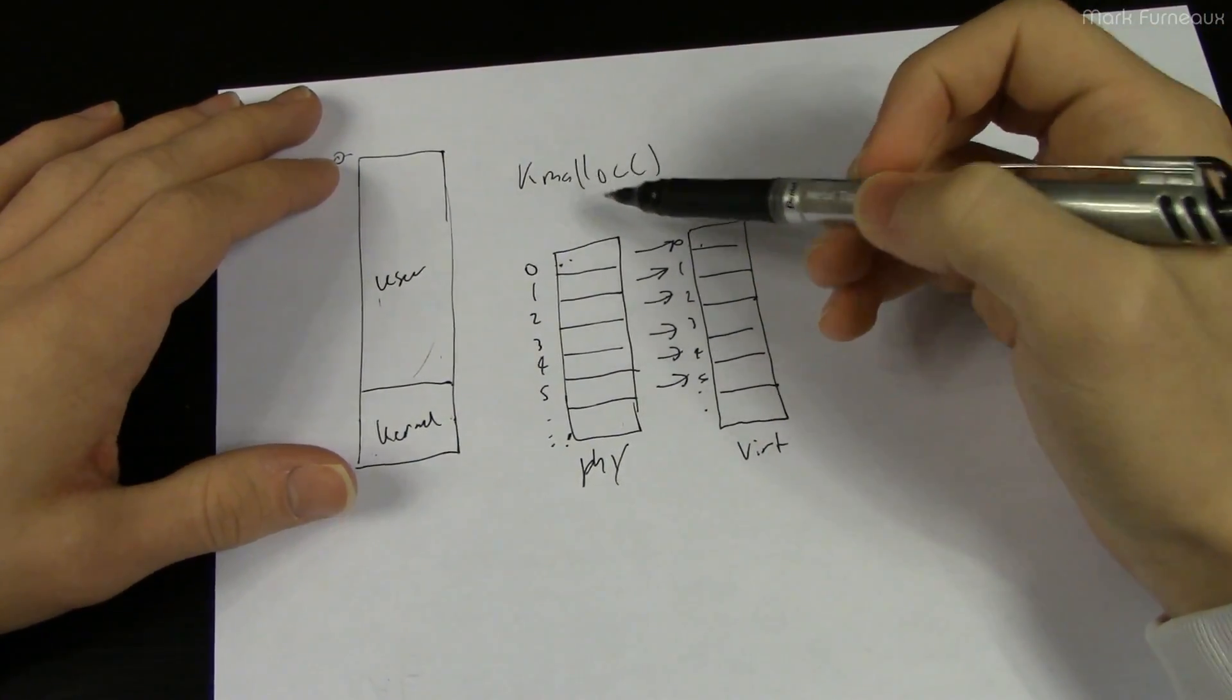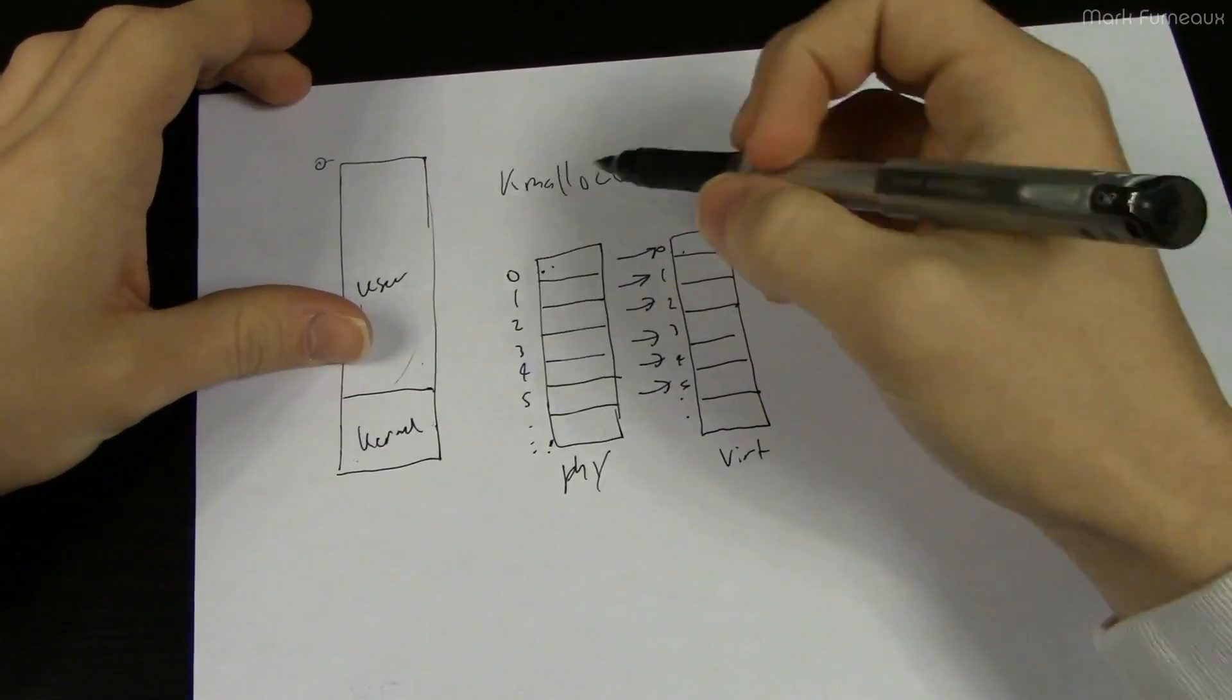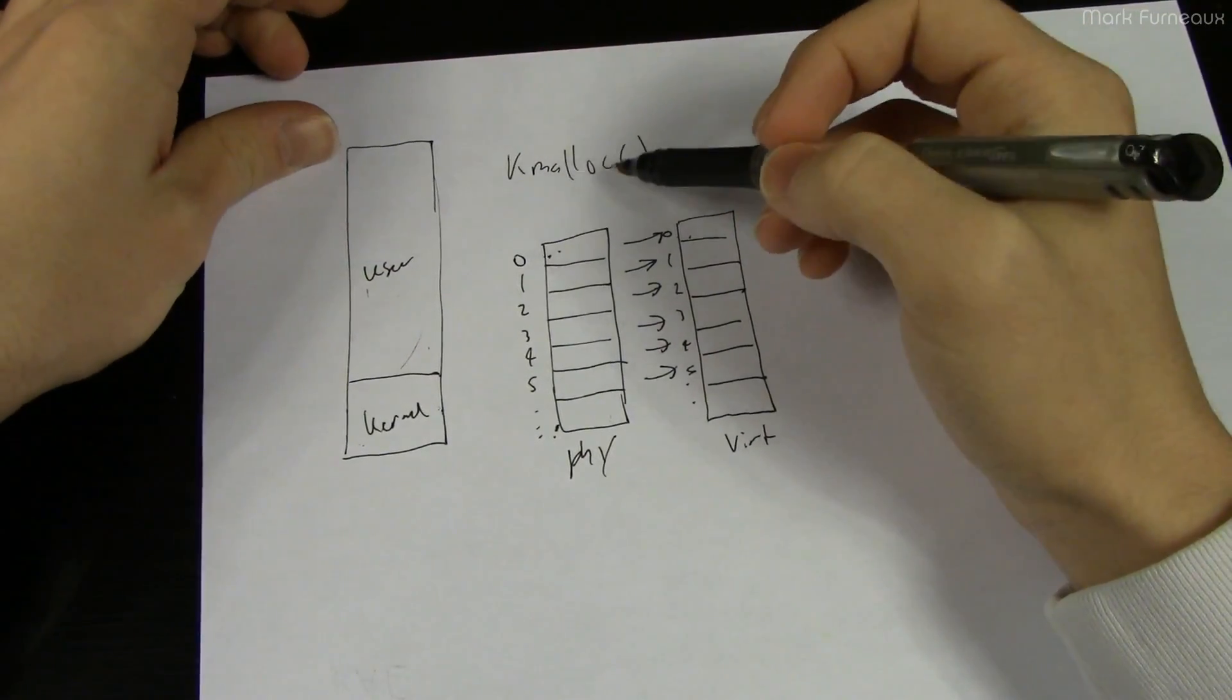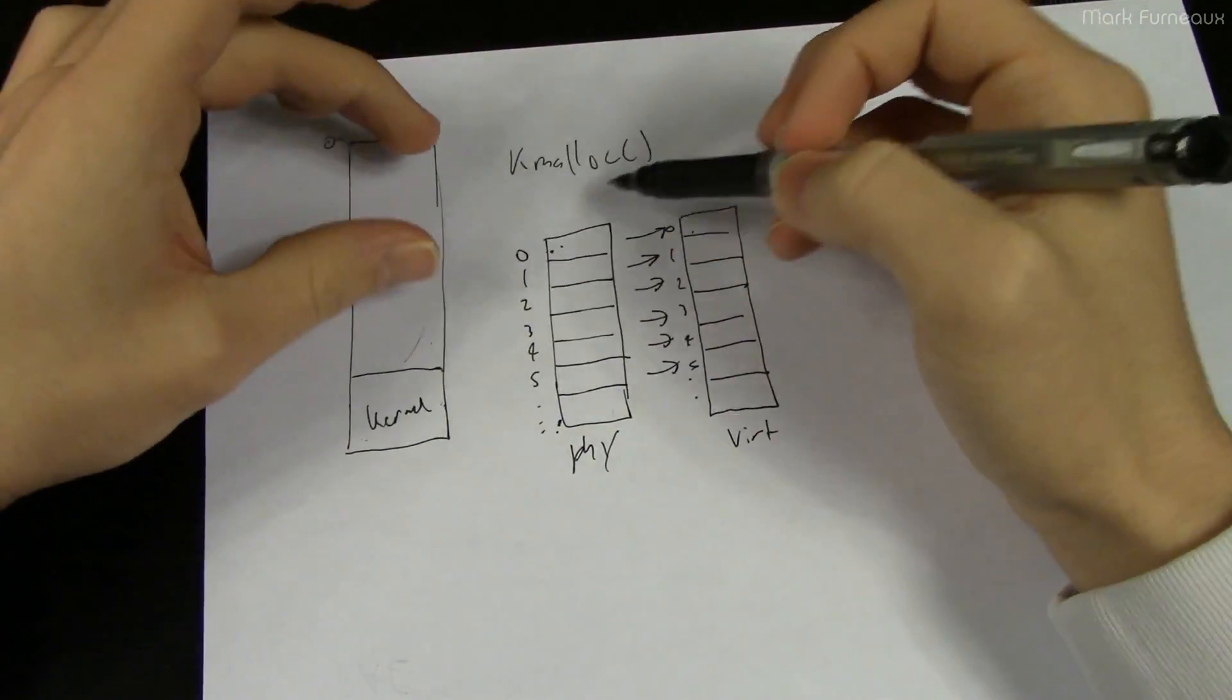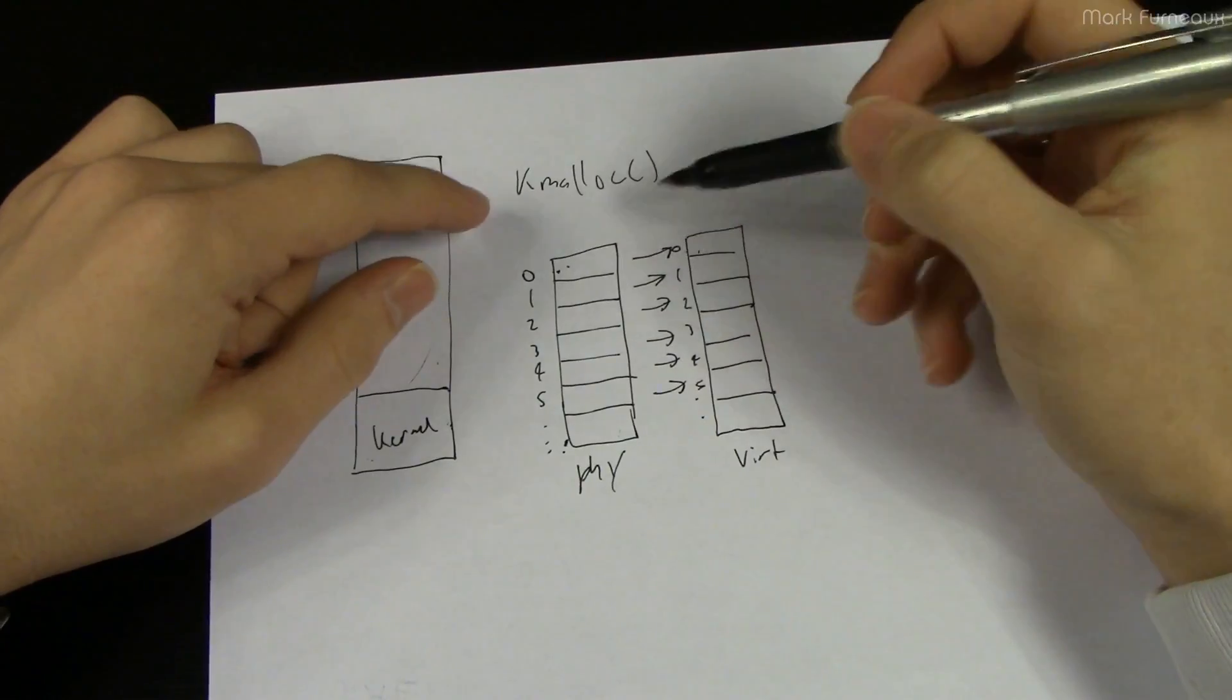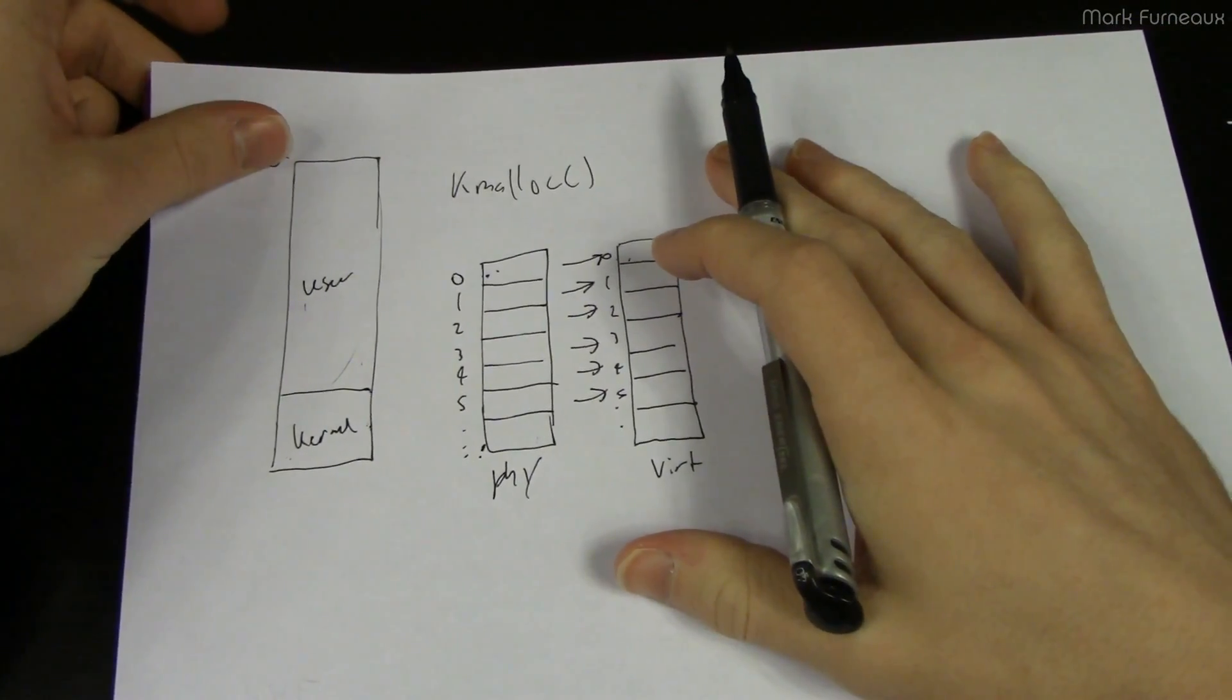And kmalloc is basically advised for pretty much everything. However there's a limitation with kmalloc in that you can only allocate relatively small chunks of memory. If memory serves me correctly I think it's only about 4 megabytes is the maximum you can ask from kmalloc in one chunk. So if you need more than 4 megabytes of contiguous memory you're gonna have to come up with something else to do.